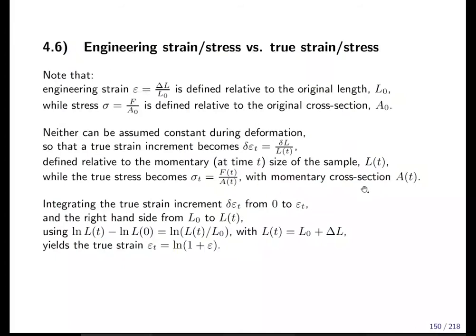True strain is generally the better quantity to work with. When you evaluate the integral you get something like a logarithm: the logarithm of l(t) divided by original l. True strain and engineering strain are related by epsilon t equals the logarithm of one plus epsilon, where epsilon is the engineering strain and epsilon t is the true strain.